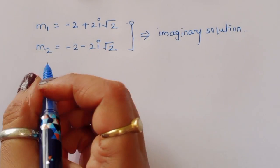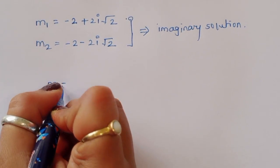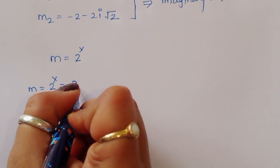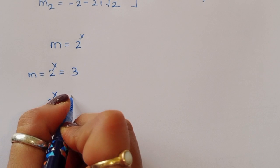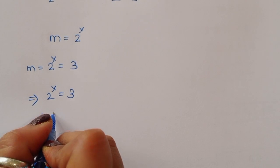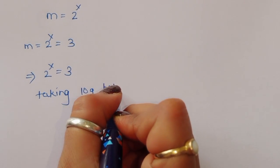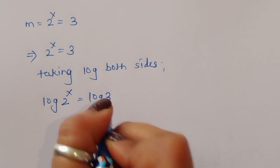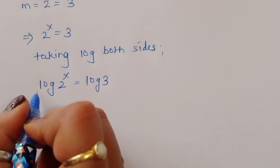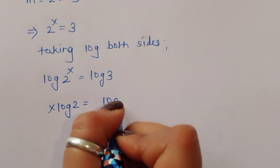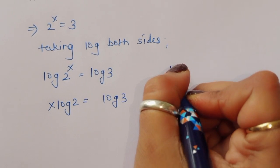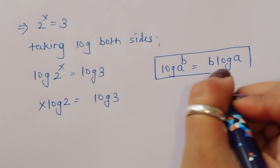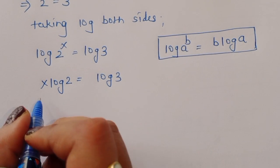We already have the real value m = 3, and since m = 2^x, we get 2^x = 3. Taking log of both sides: log(2^x) = log(3). Using the formula log(a^b) = b·log(a), we get x·log(2) = log(3).